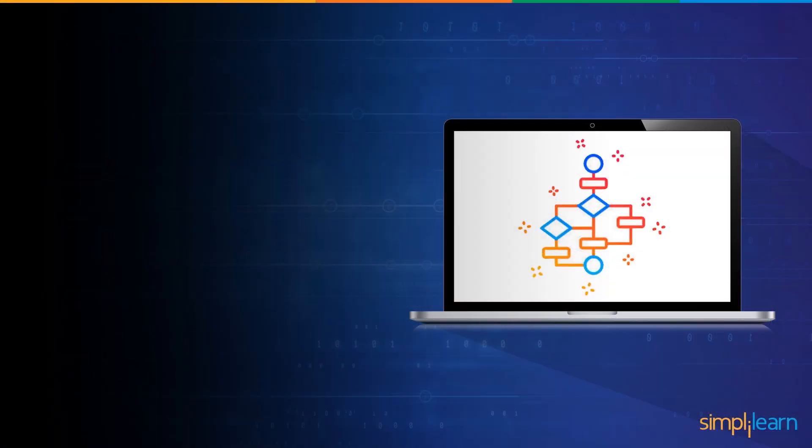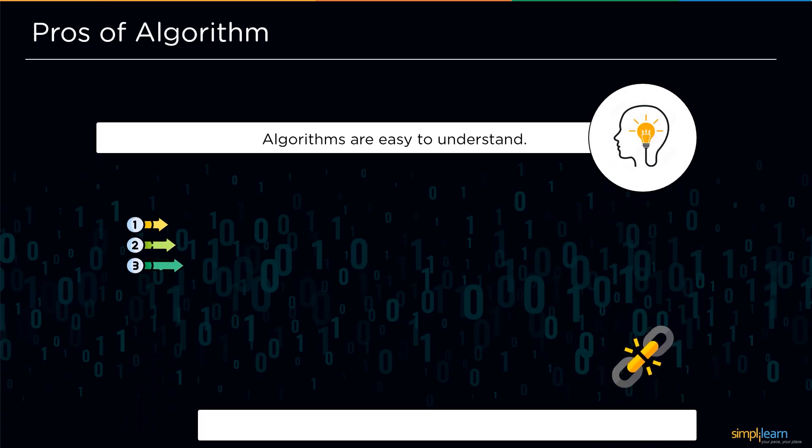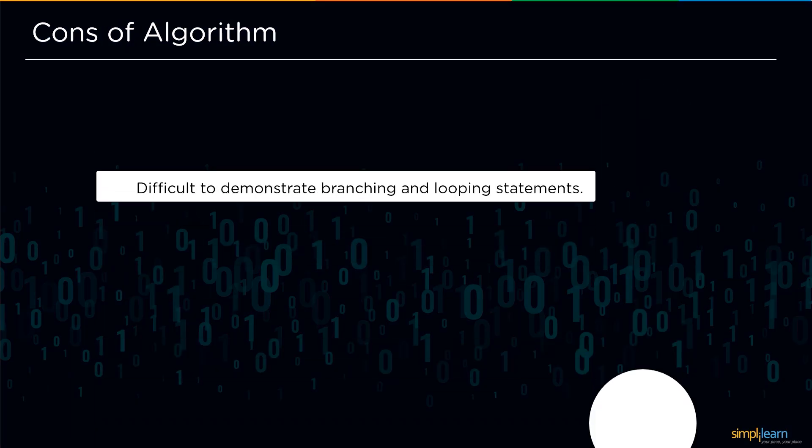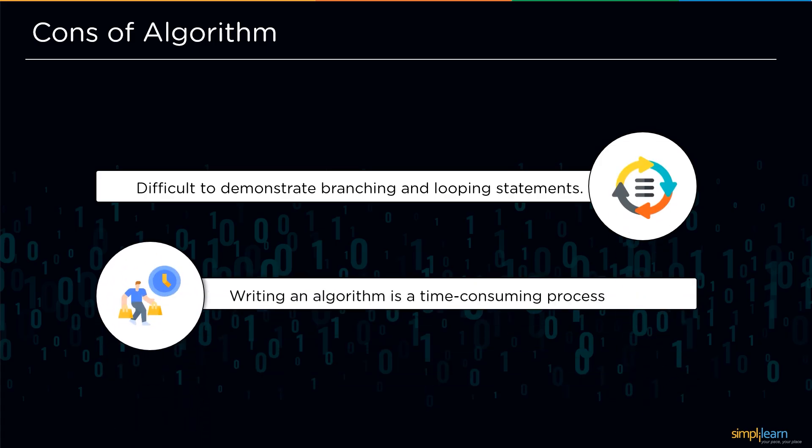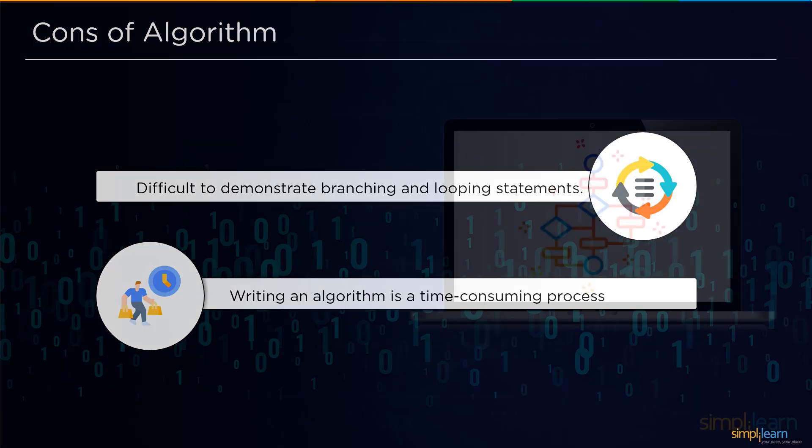After learning about algorithm complexity, we will look at some of the algorithm's pros and cons. Let's start with the advantages of algorithms. Firstly, algorithms are easy to understand. Next, algorithms are step-by-step representation of a solution. And lastly, the problem is broken down into smaller bits or steps in an algorithm, making it easier for the programmer. Now an algorithm also has various drawbacks, one of which being it takes long time to write, hence it is time consuming. Second con of the algorithm is algorithms make it harder to demonstrate branching and looping statements.